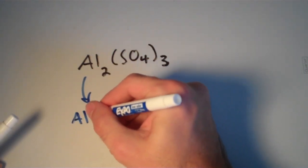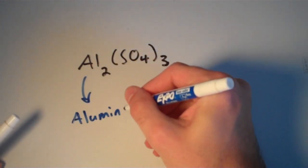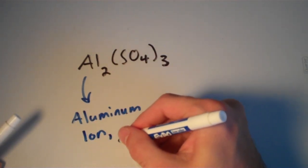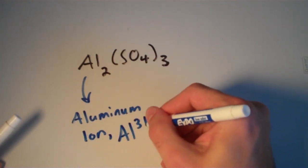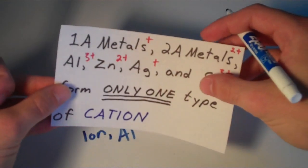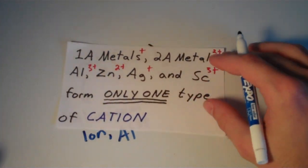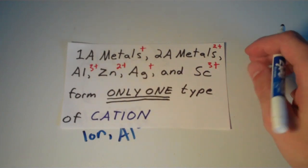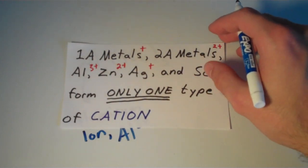Our cation is the aluminum ion, which is Al3+. Now aluminum isn't a group 1A or a group 2A metal, but it does form only one type of cation. As you can see, if I bring back my list here, aluminum does fall into the list of metals that form only one type of cation. So we don't need to worry about a Roman numeral in this case either.